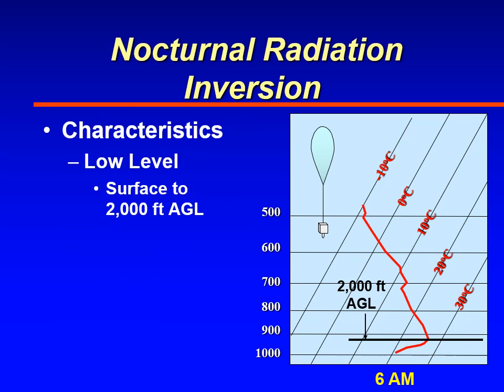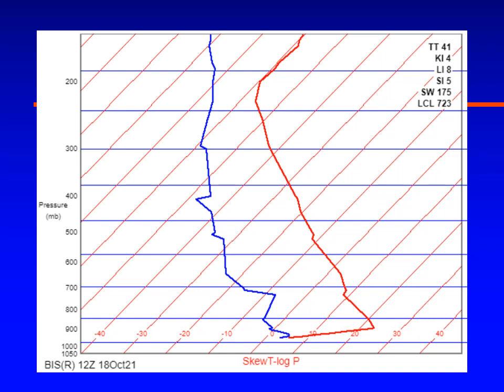These temperature inversions typically happen when you lose the most surface radiation — under clear skies — and usually occur in the lowest layers, from the surface up to one or two thousand feet AGL. Here's an example of a strong inversion at Bismarck, North Dakota in October 2021. The red line shows temperature increasing from about 5°C at the surface to about 24°C at 900 millibars, roughly 3,000 feet MSL.